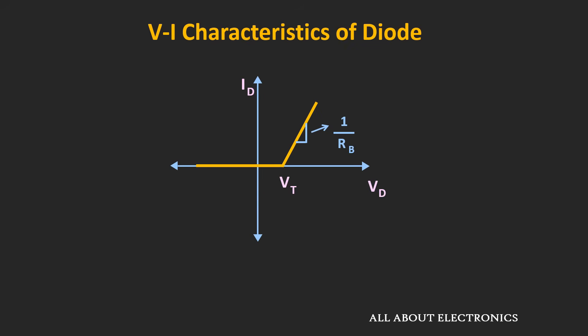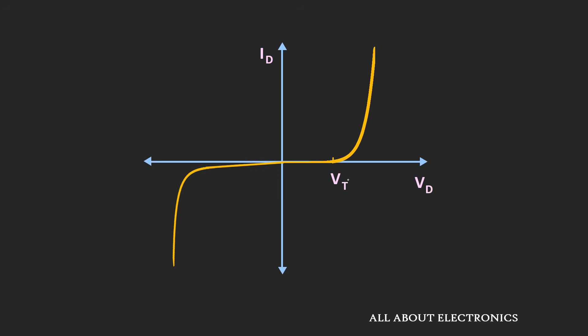In this second approximation of the diode, we have assumed it is non-conducting until the applied voltage crosses the threshold voltage, and then it offers some finite resistance. This type of characteristic is known as the piecewise linear characteristic, because we have segmented the actual diode characteristic into piecewise linear sections — non-conducting up to the threshold voltage, and offering finite resistance after it.